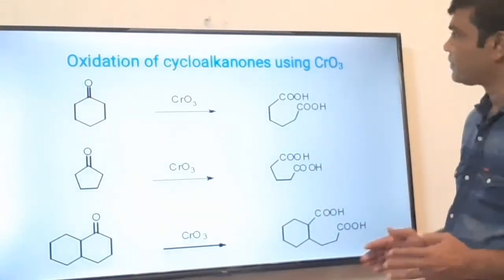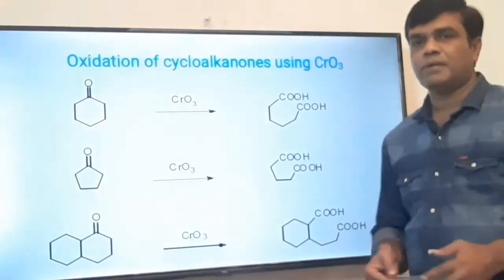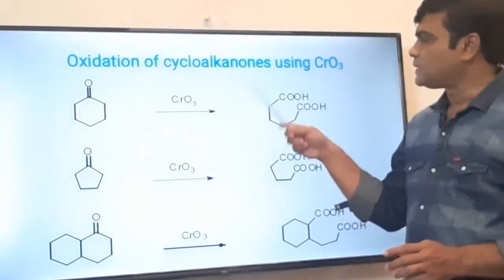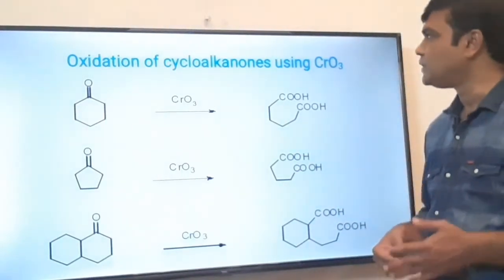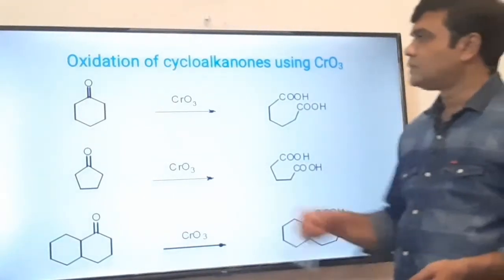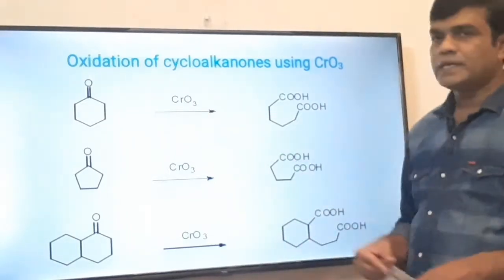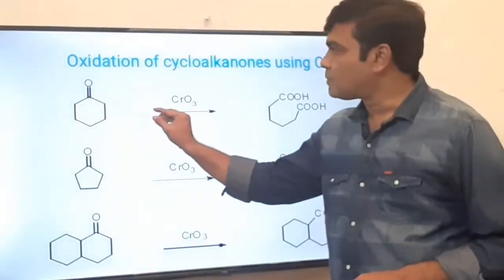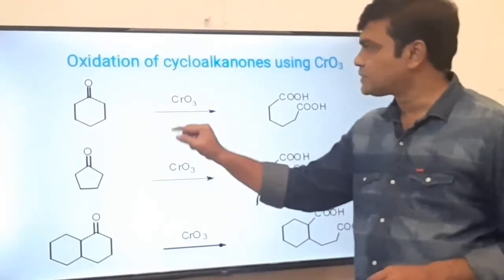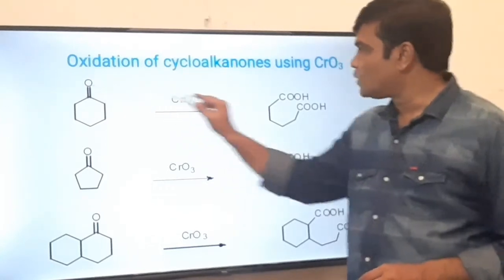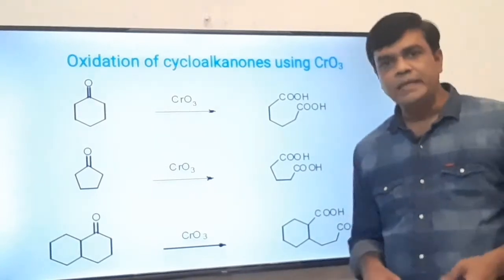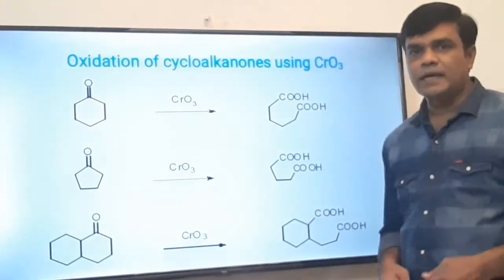The second reagent is the oxidation of a ketone with chromium trioxide. Special emphasis here is on the oxidative cleavage of cyclic ketones. Cyclohexanone on oxidation with chromium trioxide undergoes carbon-carbon bond cleavage between the carbonyl carbon and the alpha carbon. The carbonyl carbon oxidizes to a COOH group and the alpha carbon also oxidizes to a COOH group.